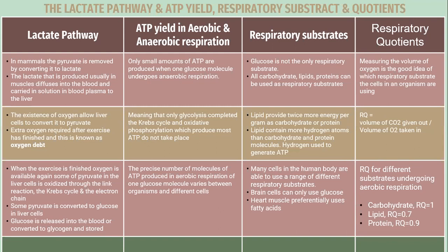When exercise is finished, oxygen is available again. Some of the pyruvate in liver cells is oxidized through the link reaction, the Krebs cycle, and the electron transport chain. Some pyruvate is converted to glucose in liver cells. Glucose is released into the blood or converted to glycogen and stored.